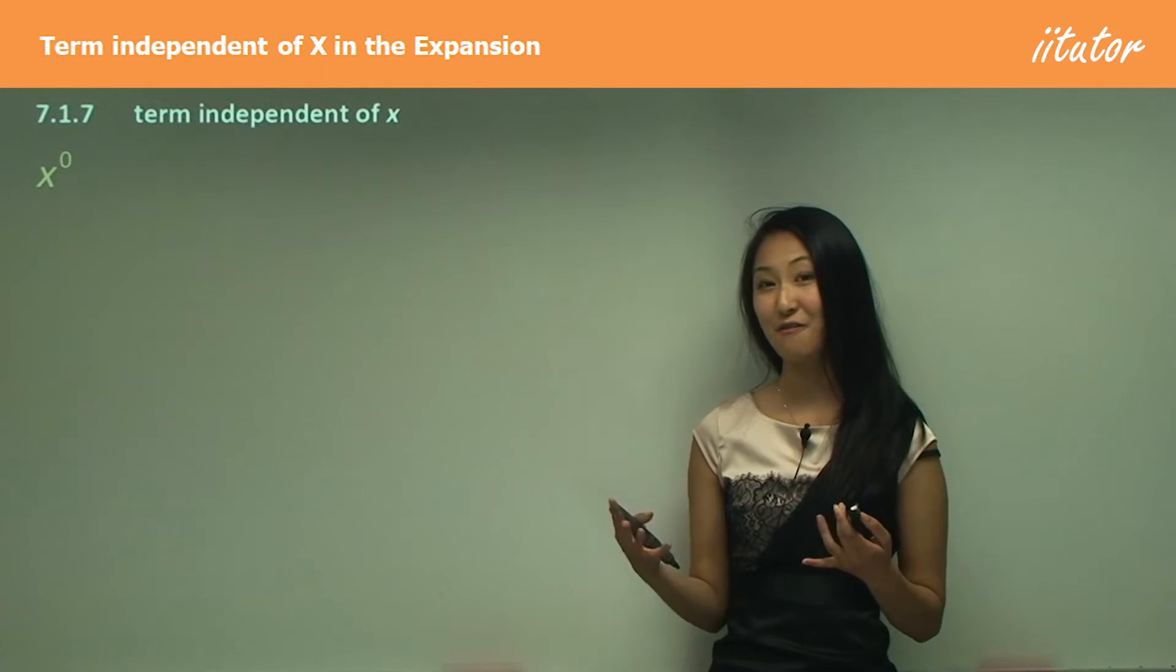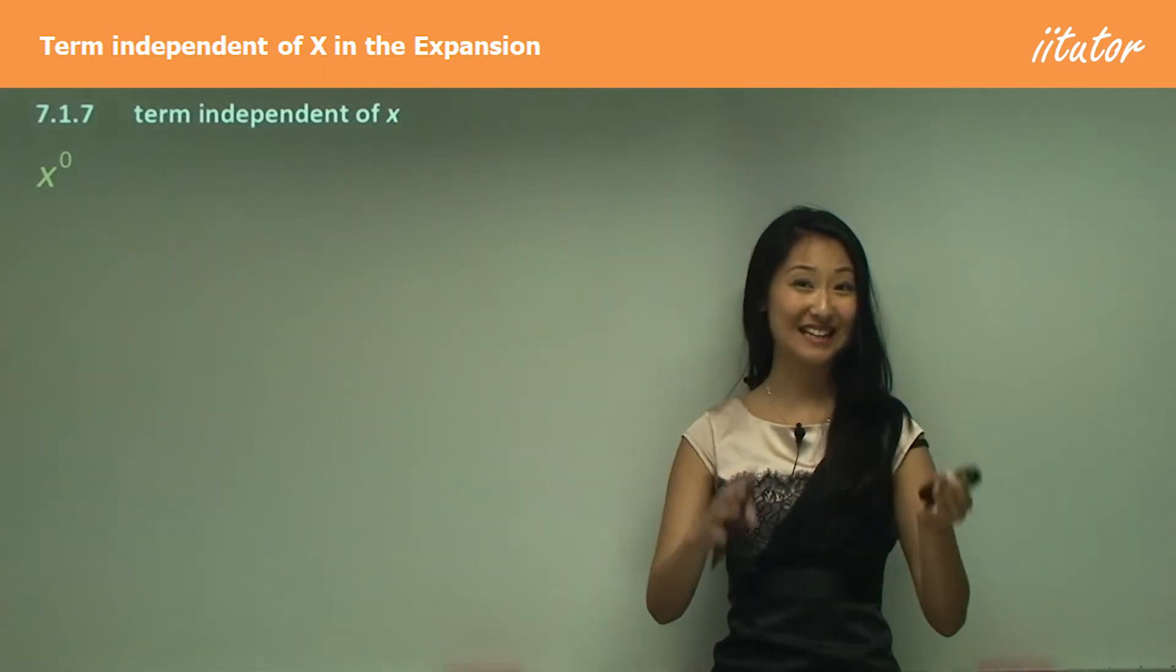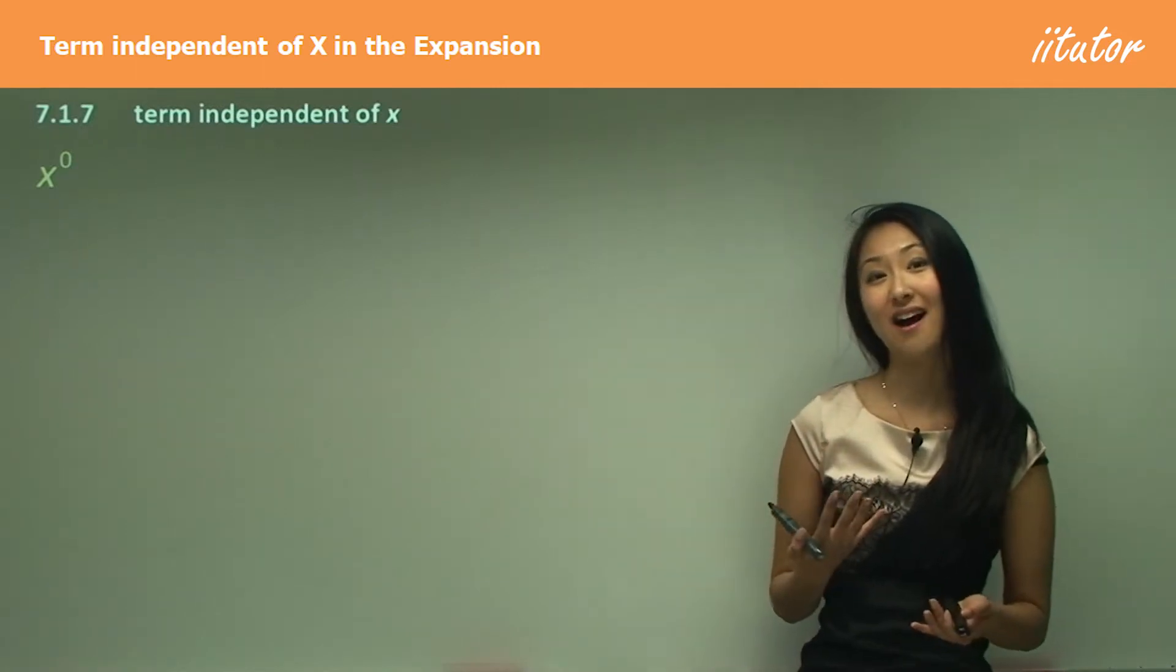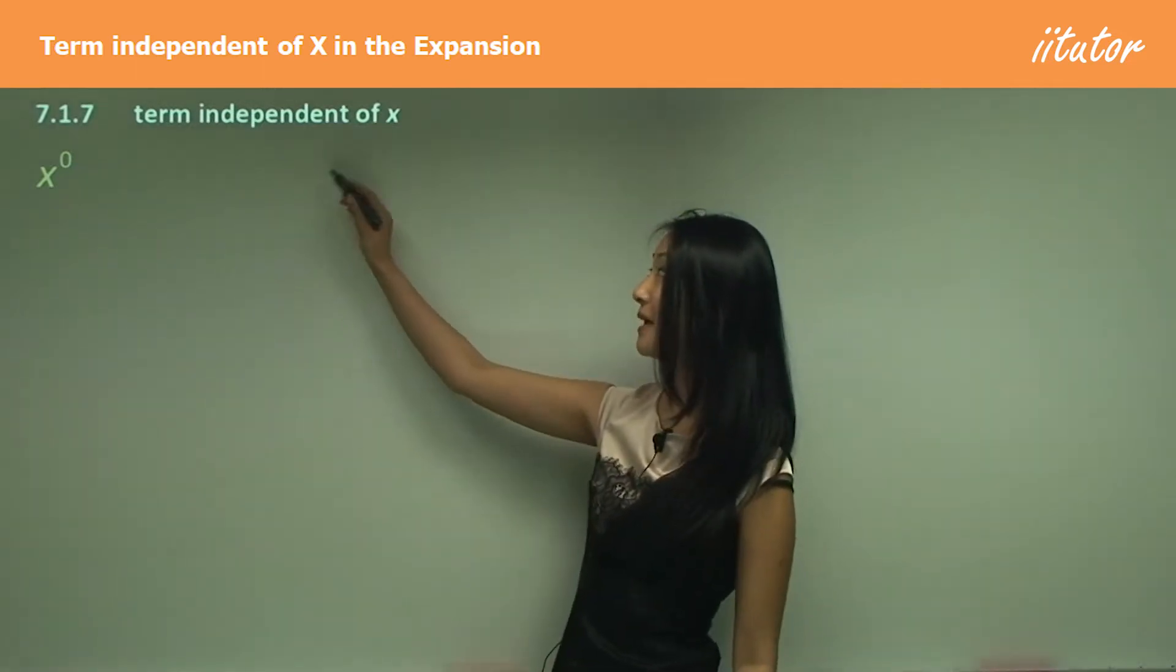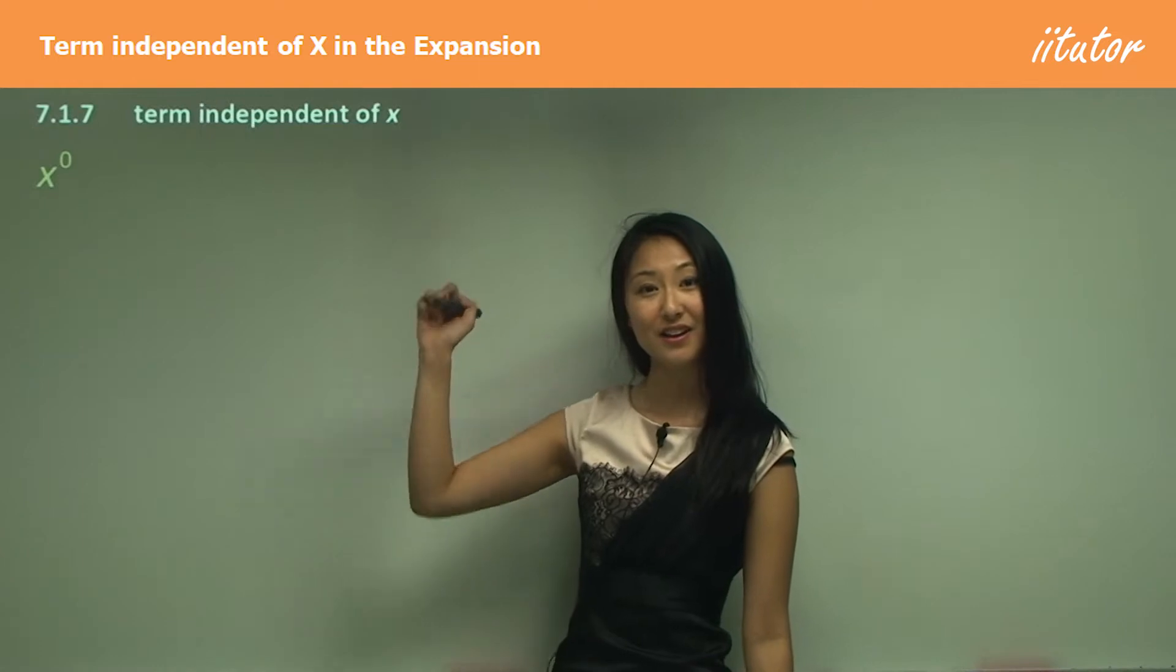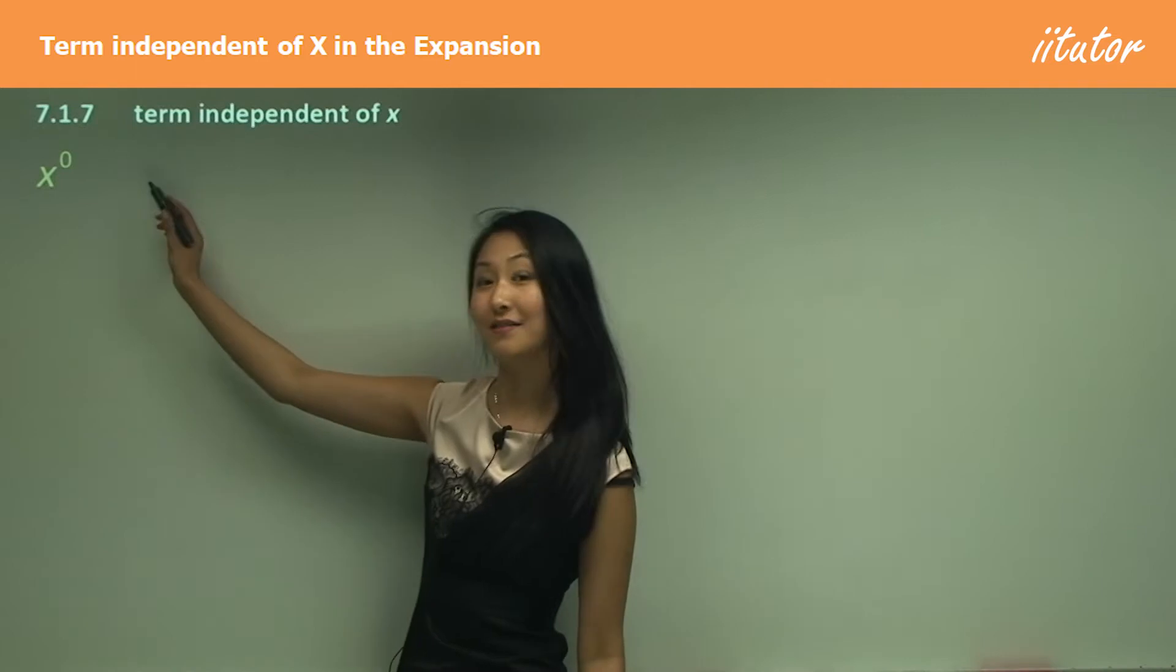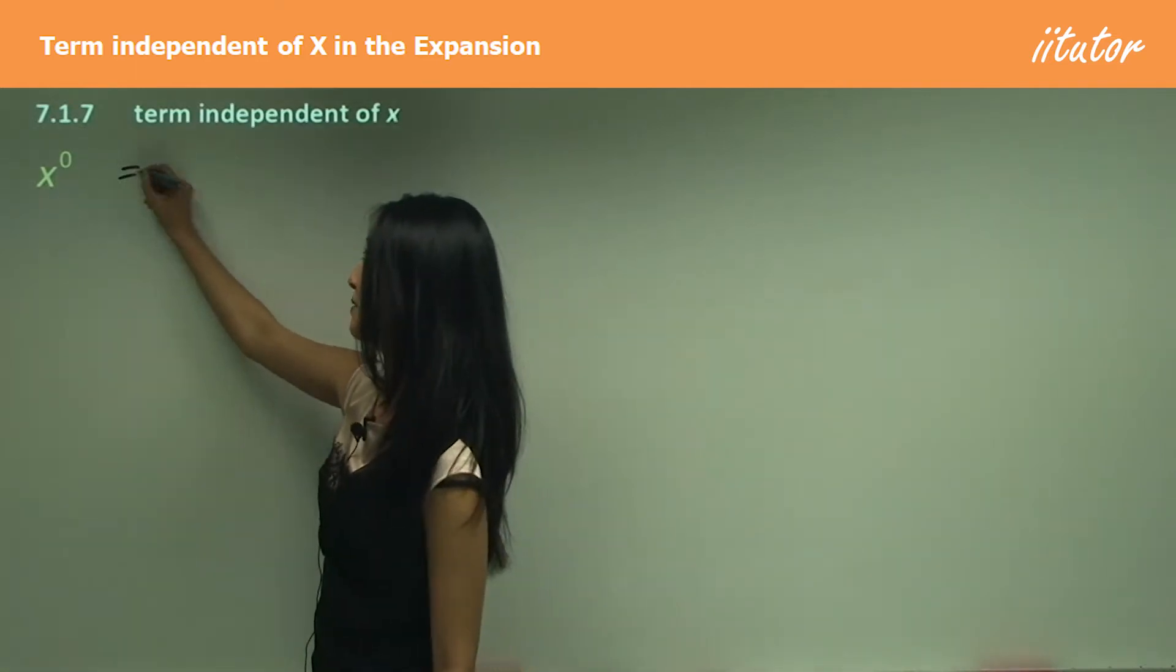We've worked out coefficients using a specific method, and we can use that same method to find the term independent of x. That's a term that's just a number with no x, because you have x to the power of zero, which equals one.